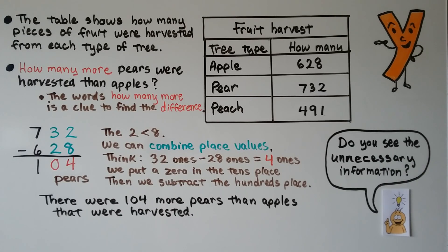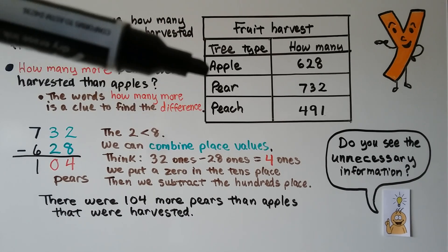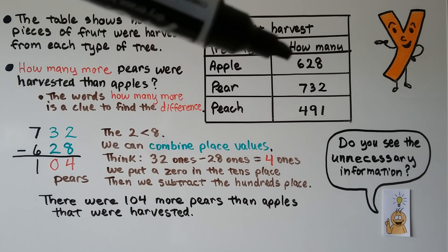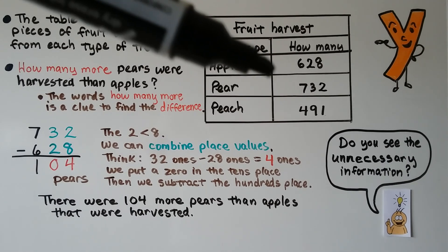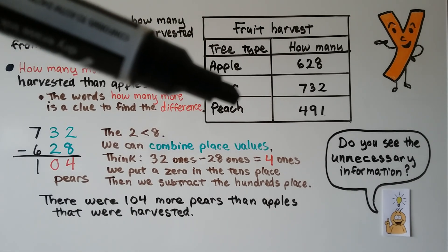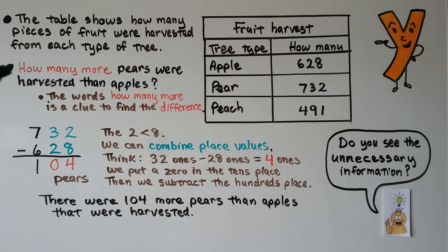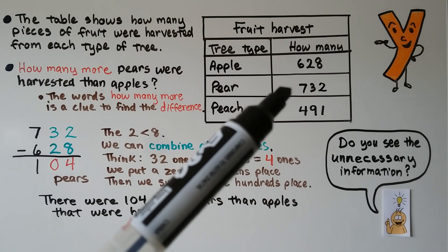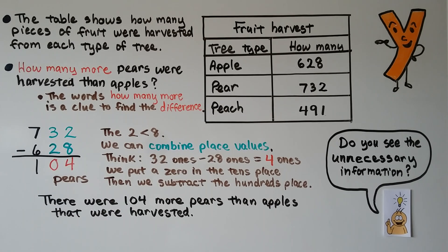The table shows how many pieces of fruit were harvested from each type of tree. Let's take a look at the table. It says fruit harvest, tree type apple, pear, peach. There were 628 apples that were harvested, 732 pears, and 491 peaches. The question is, how many more pears were harvested than apples? In other words, how many more is a clue to find a difference, so we know we need to subtract. 732 pears minus 628 apples.